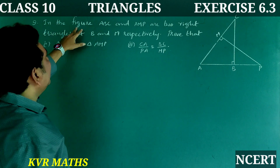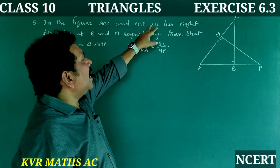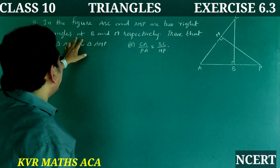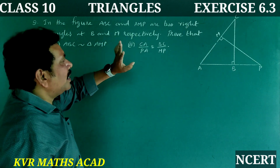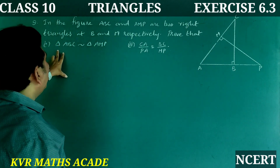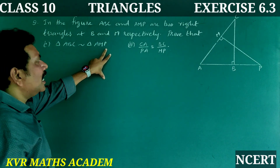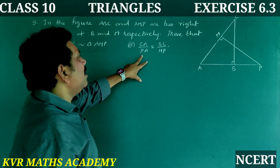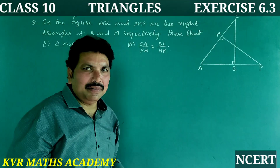Ninth problem: In the figure, ABC and AMP are two right-angled triangles at B and M respectively. Prove that triangle ABC is similar to triangle AMP, and that CA/PA is equal to BC/MP.